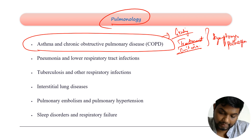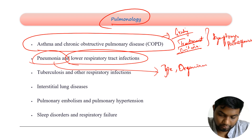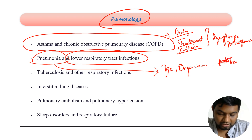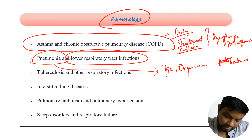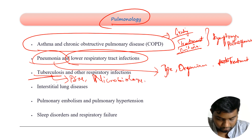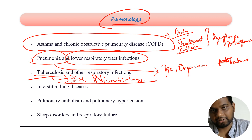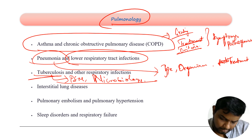Then you have pneumonia and LRTI — what type of pneumonia, organisms causing each type of pneumonia, and the treatment strategy for pneumonia — pretty high yield. Then TB, which you also study in PSM, microbiology, and pathology. Management categories, how to treat each type of TB, what TB drugs are there, and major side effects of isoniazid — all of them are important and they come in pulmonology.